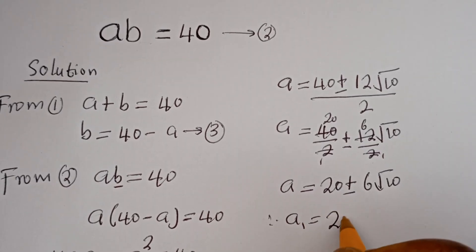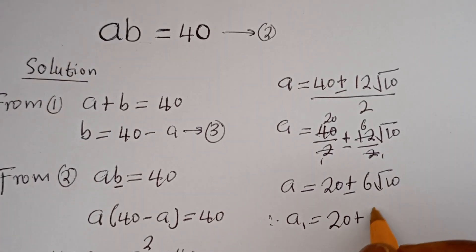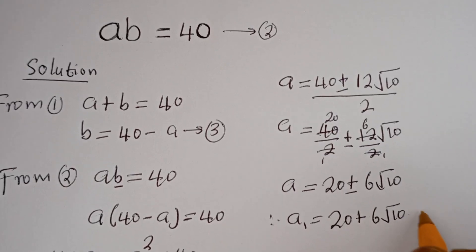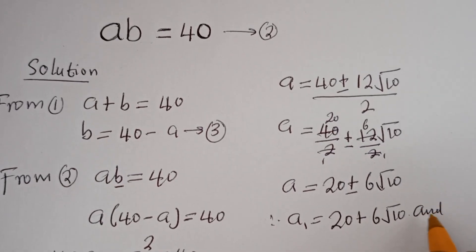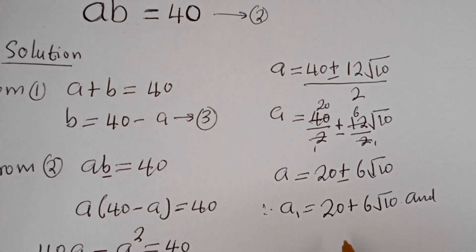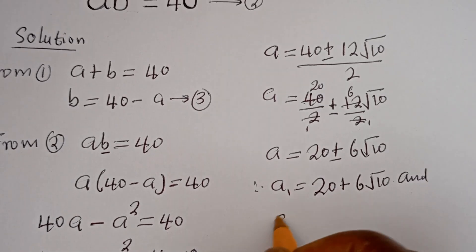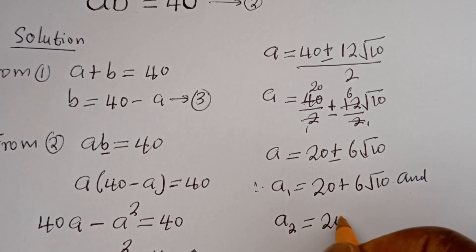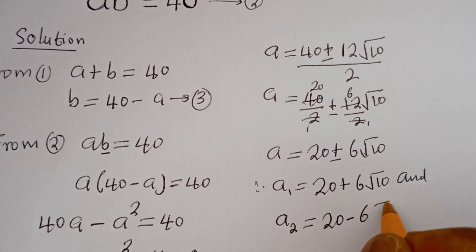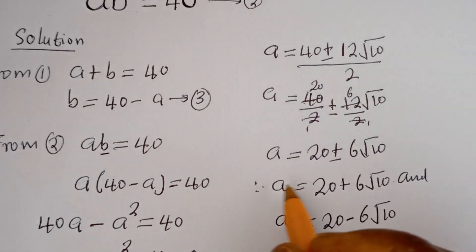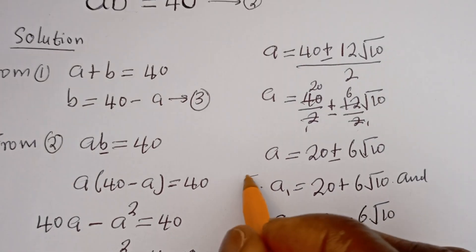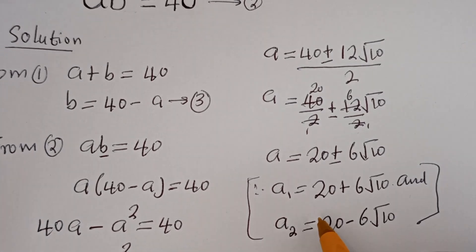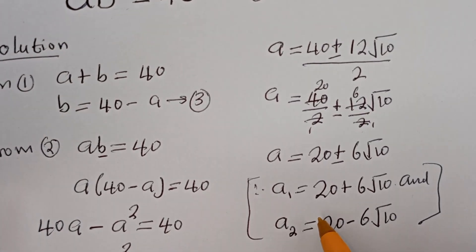Therefore A1 is equal to 20 plus 6 root 10, and A2 is equal to 20 minus 6 root 10. These are the values of A. Now, having found A, let's solve for B.